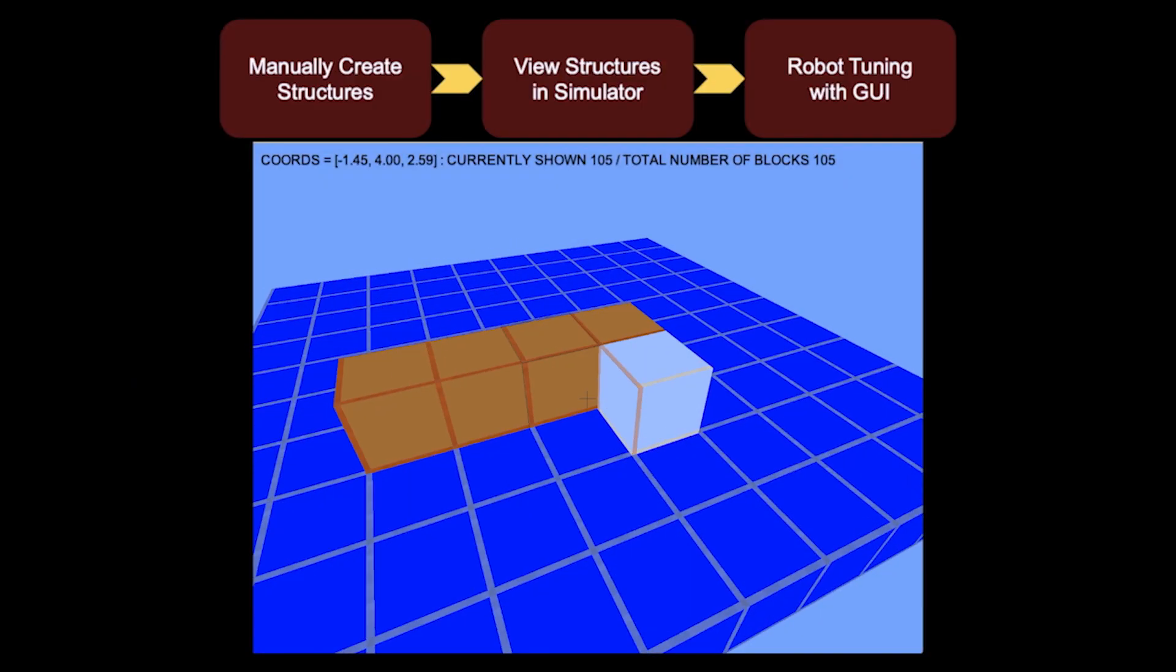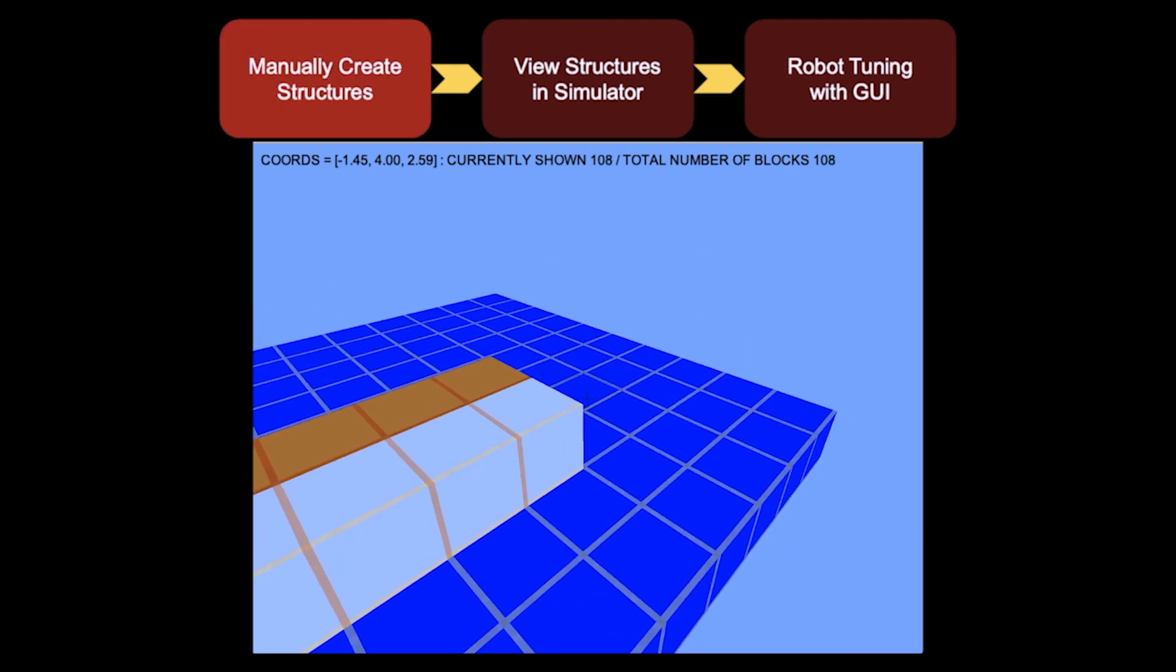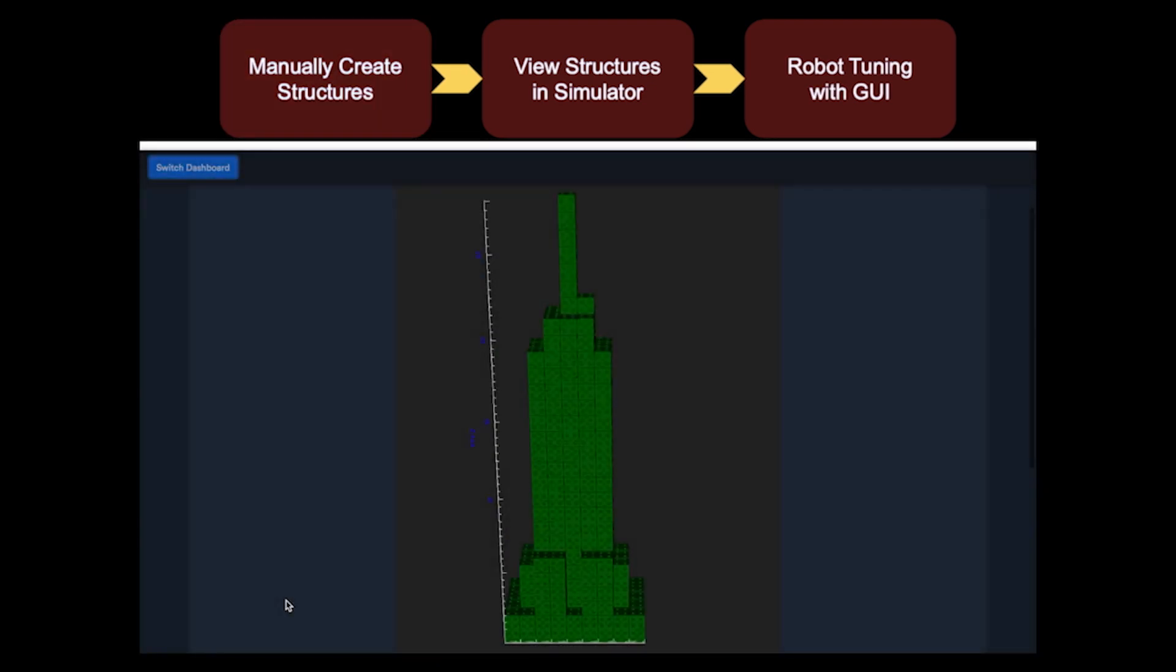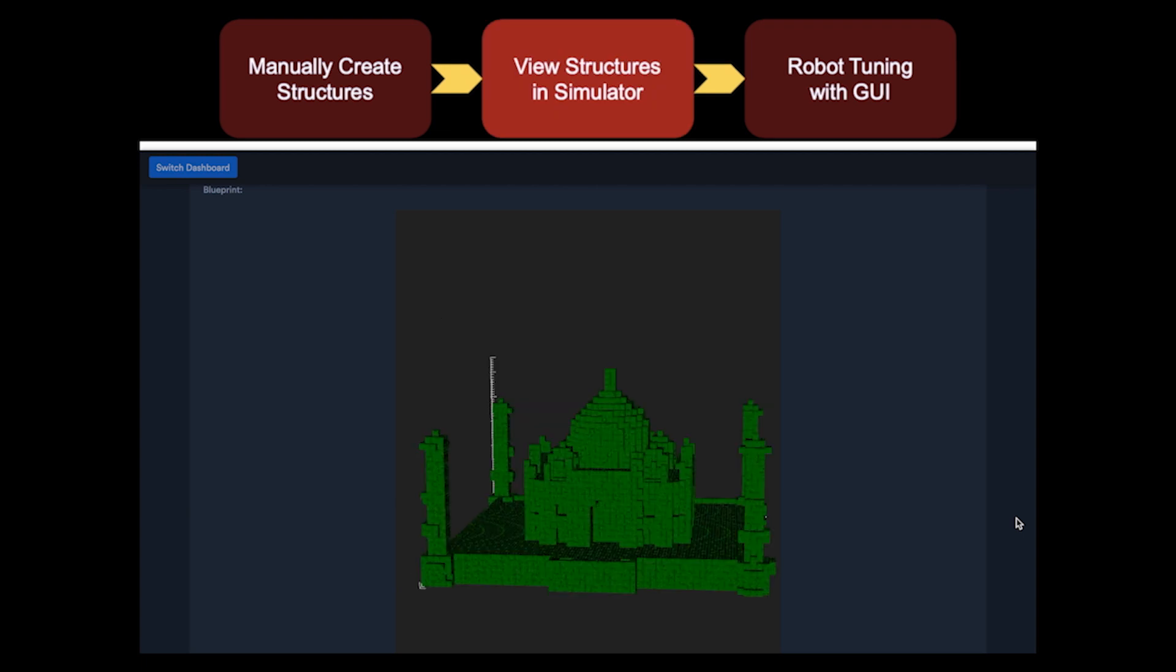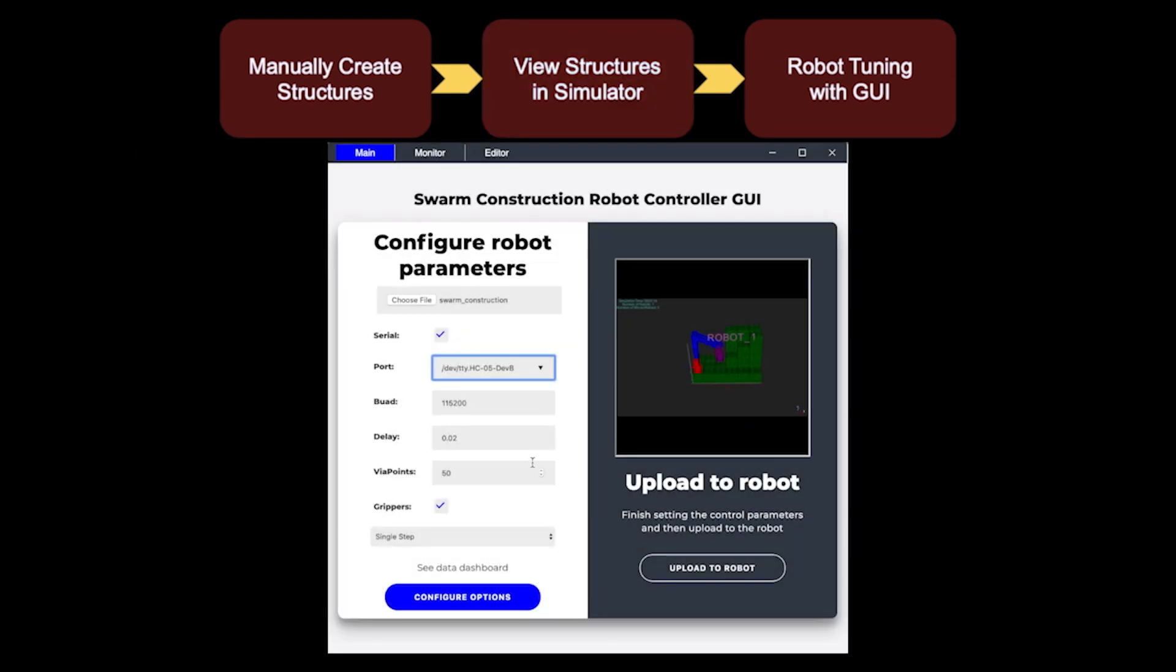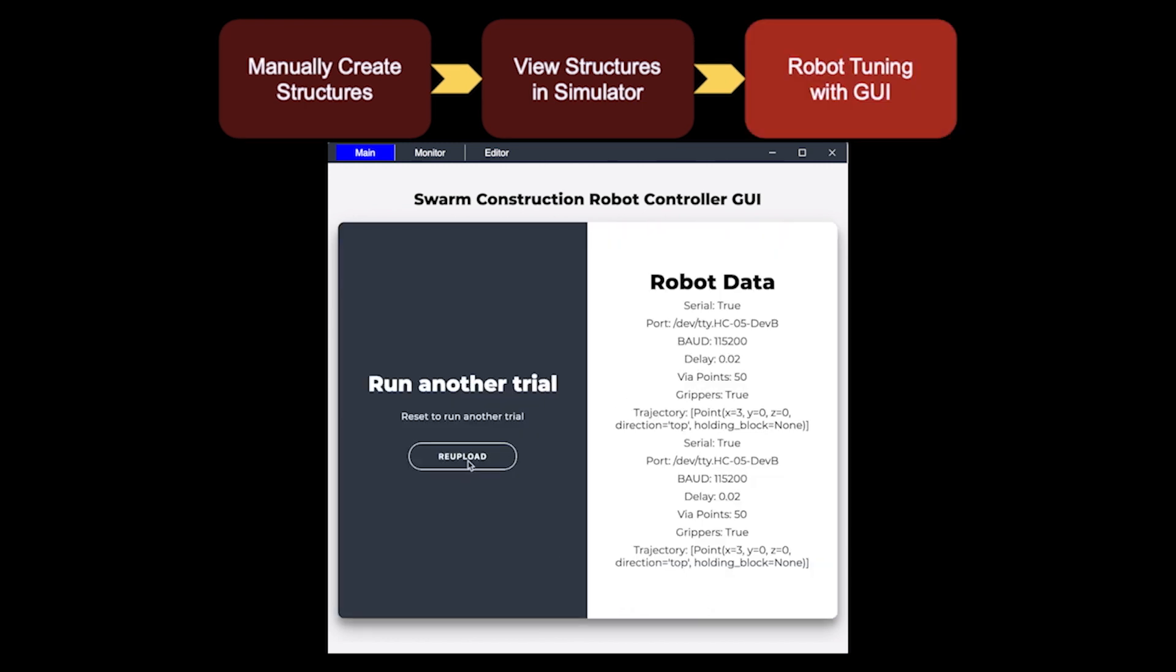The full system works by first using our custom blueprint creator to create a blueprint for a structure. This structure can then be visualized in our simulator. Next, robots have the settings such as their controllers fine-tuned in our graphical user interface. Finally, the robots are tasked with building the structure.